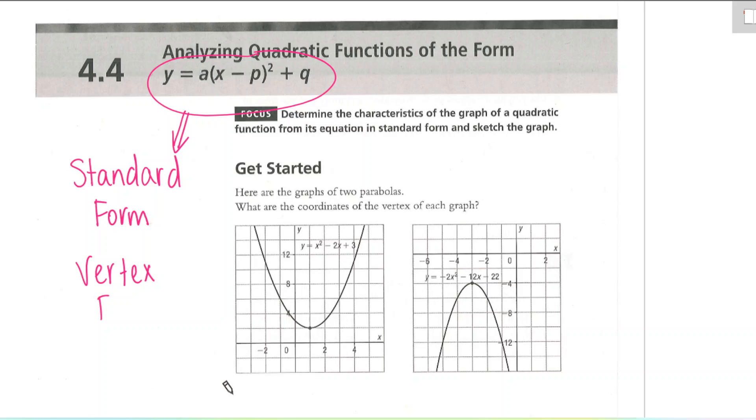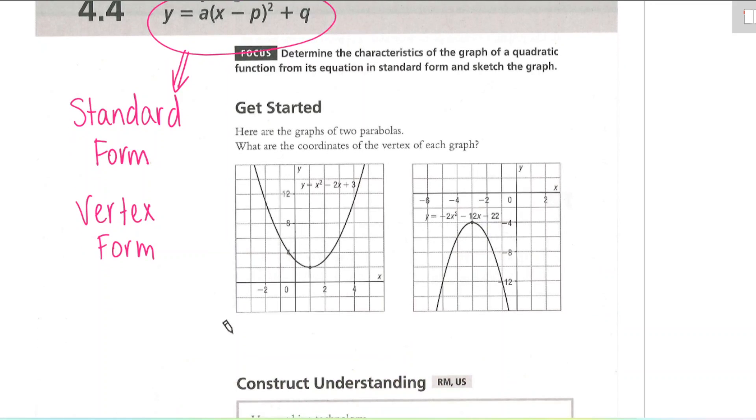And we'll see why we call it vertex form in a second. It's because you can read the vertex, where the vertex is on the graph directly from this form. I'm just going to do a quick little review of terms here. The vertex of a parabola or a quadratic function is either the max or the min point of that parabola. So I'm just pointing to the vertex here and here.